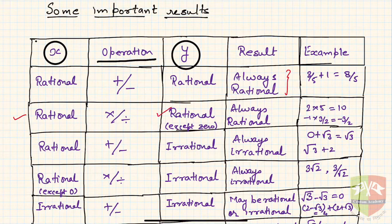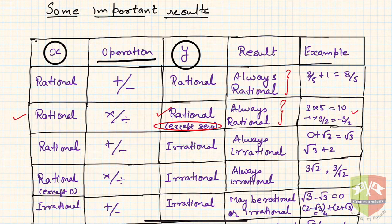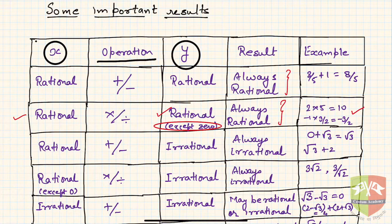Secondly, a rational number multiplied or divided by another rational number — mind you, division by 0 is not allowed, so I have written 'except 0' — always leads to a rational number. Examples: 2 × 5 is 10, −1 × 3/2 is −3/2. You can try some division examples as well; you will always end up with a rational number.